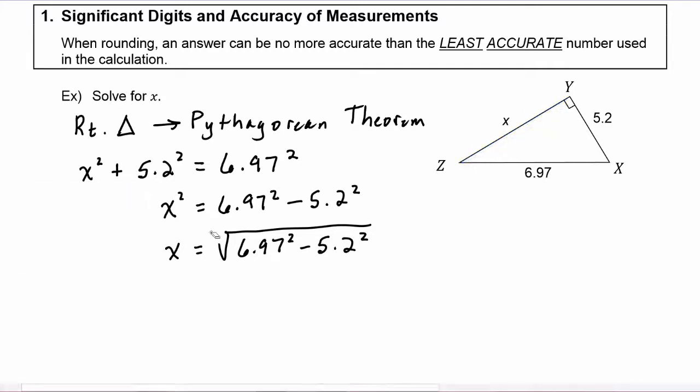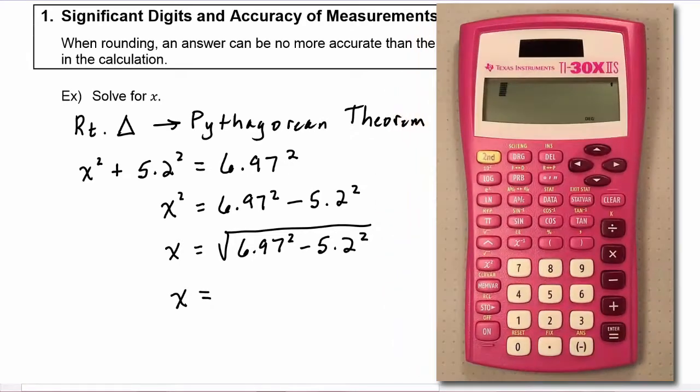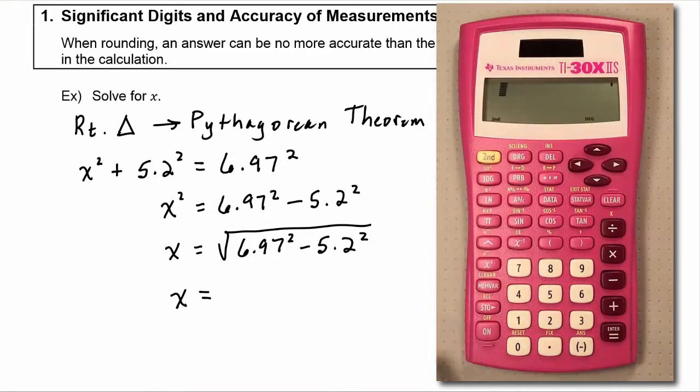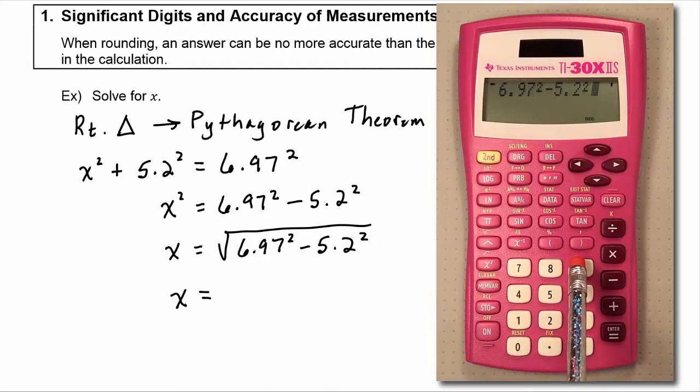At this point we would pick up our calculators and do this calculation. So we'll hit the second key, then we'll hit the x squared button because above it is square root. Enter our 6.97, hit the squared key, minus 5.2, hit the squared key, close your parenthesis, and then hit enter.